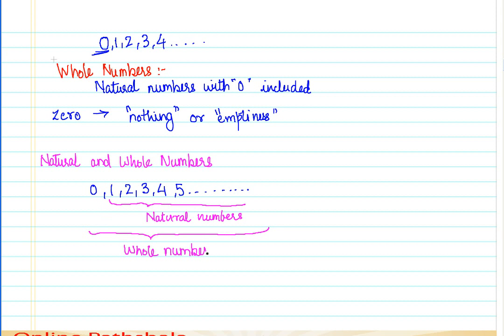If we observe this carefully, we can easily make out that all the natural numbers are contained within the whole numbers. So all natural numbers are whole numbers.